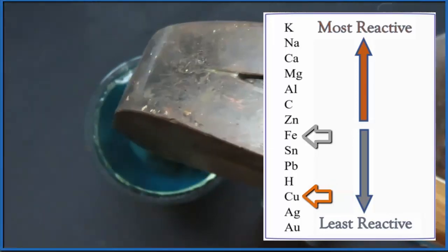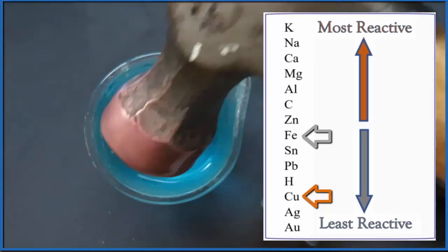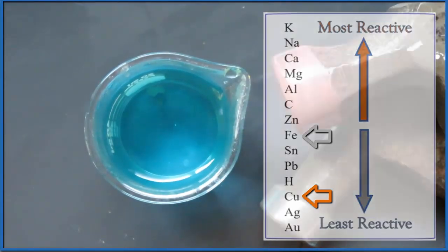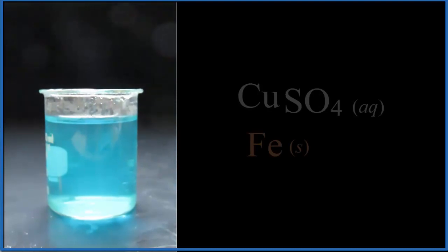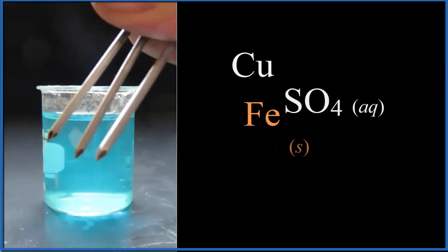So where's the iron now? Well, it's dissolved in the water. It's replaced the copper. That's why that blue color went away. Copper's on the hammer. And that iron, it's FeSO4 aqueous. It's dissolved in the water. If we evaporated the water, we'd see crystals of FeSO4.